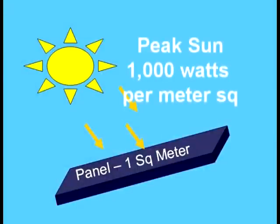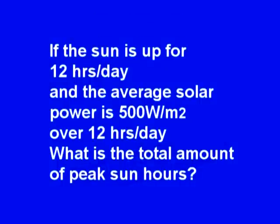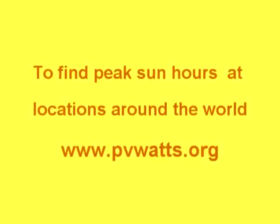We get a thousand watts per square meter, and coincidentally this is what they use for the rating conditions. Every nameplate rating on the back of the modules is based on this thousand watts per square meter solar radiation level. So if the sun is up for twelve hours a day and the average solar power is 500 watts per square meter over twelve hours, the total amount of peak sun hours equivalent would be six — six kilowatt hours per square meter. There are internet sites to look up peak sun hours in locations around the world.